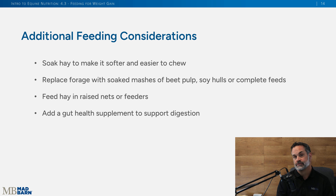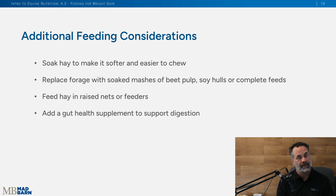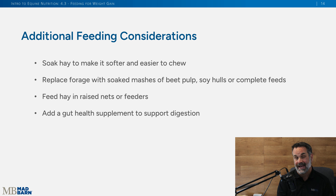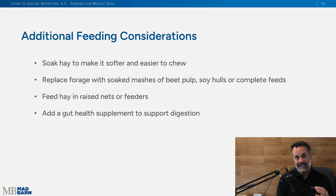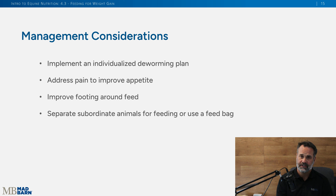Some other considerations: you may want to soak hay to make it softer, especially for horses with dental issues, though be aware this could reduce palatability. In severe dental cases, you can replace hay with mashes of beet pulp, soy hulls, or complete feeds that the horse can easily masticate and swallow. Feed hay in raised nets or feeders, especially for horses with neck pain or other skeletal muscle injuries that make it easier to access forage. You may also want to add a gut health supplement that supports digestion.